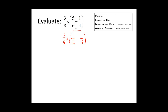We multiplied 6 times 2 to get 12, so we need to multiply the numerator times 2. Five times 2 is 10. We multiplied 4 times 3 to get 12, so we need to multiply the numerator times 3. Our new numerator is 1 times 3, which is 3. We have the same denominator, so now we will subtract the numerators. Ten minus 3 is equal to 7. So now we have finished simplifying our parentheses.